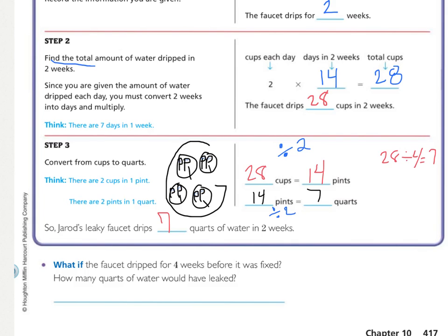So let's look right here at the what if. What if the faucet dripped for four weeks before it was fixed? How many quarts of water would have leaked? So how would you solve that? It's going to be a multi-step problem again. You would follow the same steps, except for that right here when you're converting the days in weeks and getting your total number of cups. Instead of two weeks, right here you would insert four weeks. So press pause and solve this for four weeks.